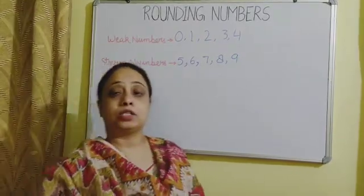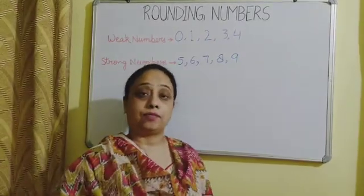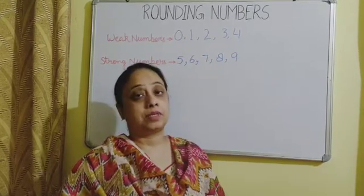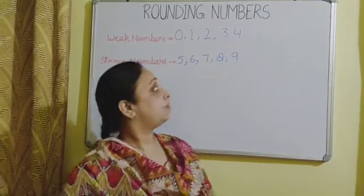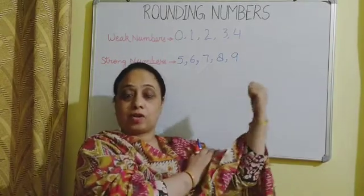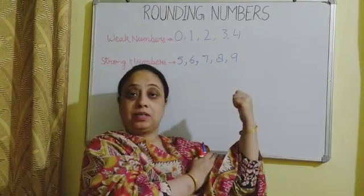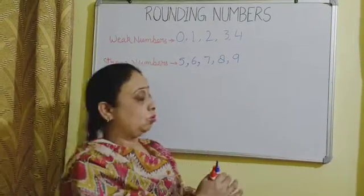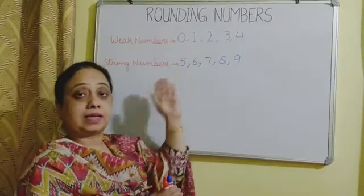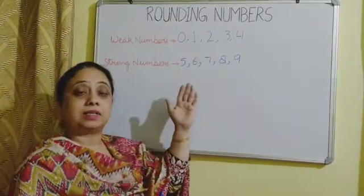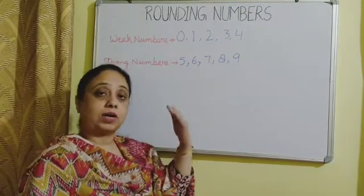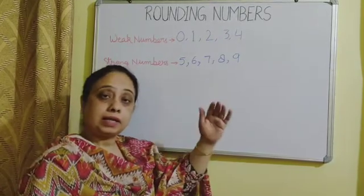To recap: 0, 1, 2, 3, and 4 are weak numbers, whereas digits 5, 6, 7, 8, and 9 are strong numbers. We have to look at the digit and then decide whether the value of the number will remain the same or it will increase.